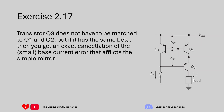This video focuses on the Wilson current mirror. In the Wilson mirror we have three transistors: Q1 and Q2, which are matched so they have the same characteristics, and Q3, which is an additional component introduced into the simple current mirror to help offset errors and create a better current source. Q1 and Q2 are matched so they have the same gain.